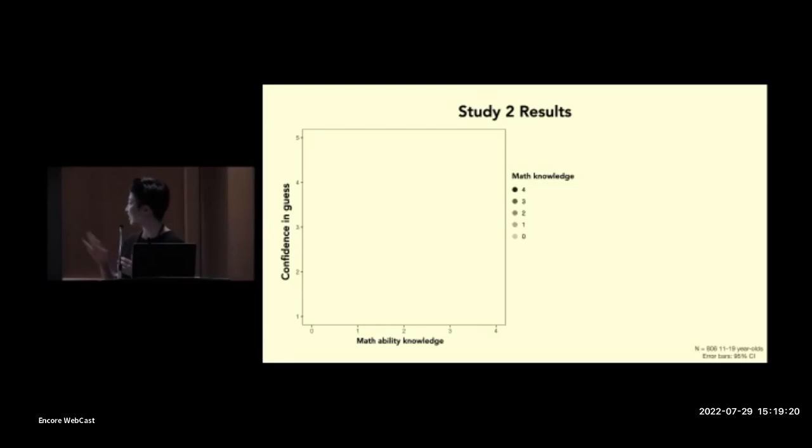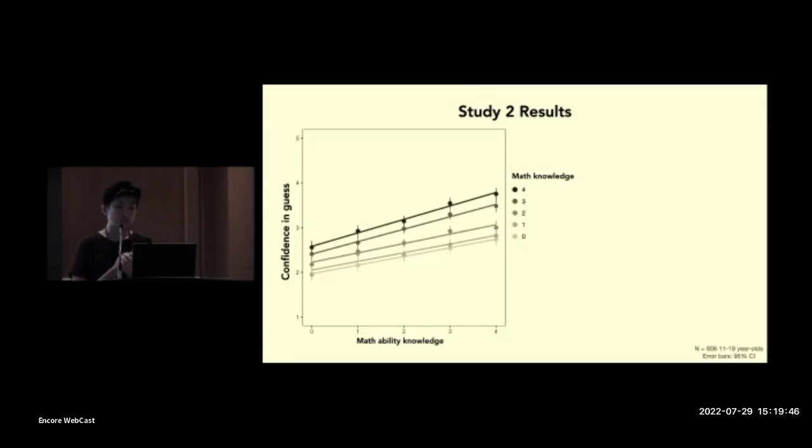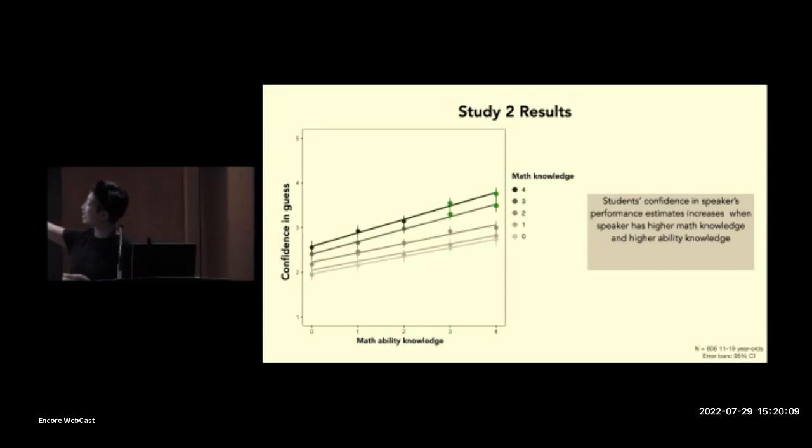Okay, so on the x-axis here, we have how many of the student's quizzes were seen. And so first, let's look at what happens when the speaker has no math knowledge, when they got zero on that quiz. So what you can see here is that the confidence in the speaker's guess increases when they have seen more of the student's quizzes. And you can also see an increase in confidence as math knowledge itself increases. And here what we found is an interaction between math knowledge and ability knowledge, such that the effect of ability knowledge is stronger when math knowledge is higher. And so broadly, what this suggests to us is that students' confidence in the speaker's estimates increases when the speaker has higher math knowledge and higher ability knowledge. And here what I'm highlighting in green is you can think about these points as the speaker who has high knowledge in both math and the student's math abilities.